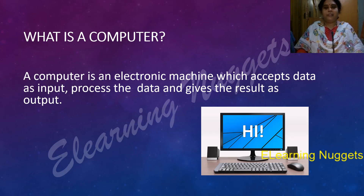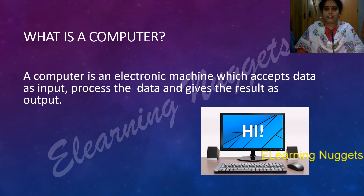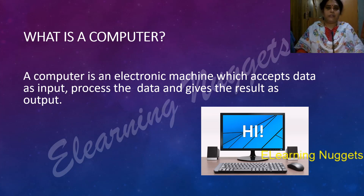What is a computer? In simple terms, a computer is an electronic machine which solves the problems you give to it. The formal definition: a computer is an electronic machine which accepts data as input, processes that data in the form of programs, and gives the desired results as output. In simple terms, a computer is an electronic machine used to solve arithmetic and logical problems.